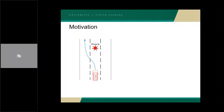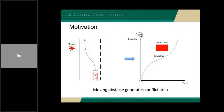Once we consider the motion of an obstacle — let's say this obstacle is a pedestrian who will cross the street — the motion of this obstacle can be reflected in the time-space range by the conflict area. To avoid this pedestrian, it's equivalent to plan a trajectory for the AVA in the time-space range, and the trajectory cannot intersect with the conflict area.